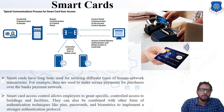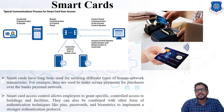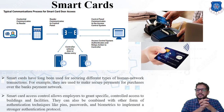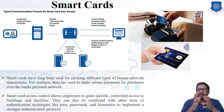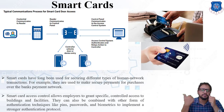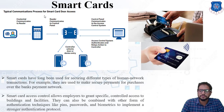Smart cards have long been used for securing different types of human network transactions — for example, making secure payments over a bank payment network. Smart card access control allows employers to grant specific permissions and control access to buildings or restricted zones, accessible only via biometrics or a smart card. They can also be combined with other authentication techniques like a PIN, passwords, or biometrics to implement a stronger authentication protocol. A typical communication process for smart card door access is shown on screen.